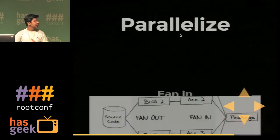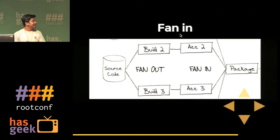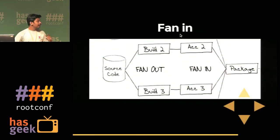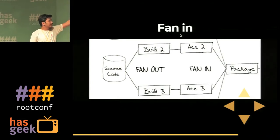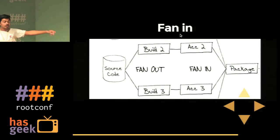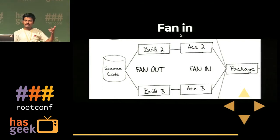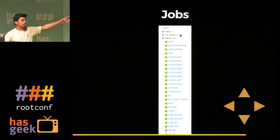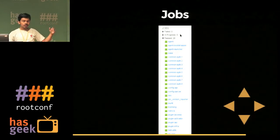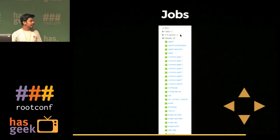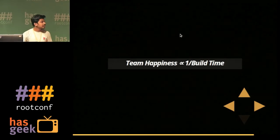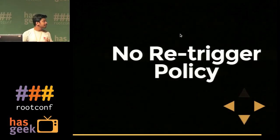Fan-in is a very brilliant feature. If you have source code feeding two builds and then you want to package it, the package step waits until both builds have finished. You're running multiple tests in parallel on different agents, getting a lesser build time. Jobs are also an alternative for parallelization. Less build time means more team happiness.